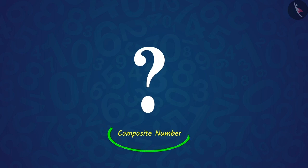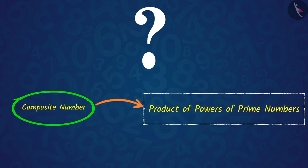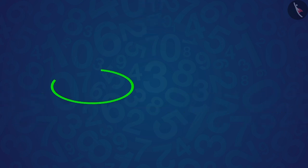Can you think of any composite number which cannot be written as the product of powers of prime numbers? Let us try to answer this. Let us factorize a positive integer, say 108,108.